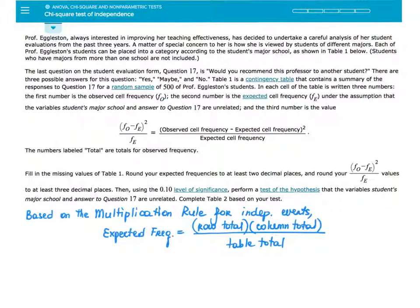Because we will be working under the assumption that the variables are independent, we can use the multiplication rule for independent events to compute the expected frequencies, and we will do that by multiplying the row total by column total and dividing that product by the table total. This formula will be used to fill in some of the numbers in the table on the next slide.